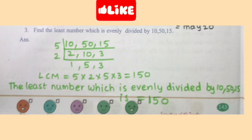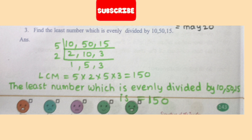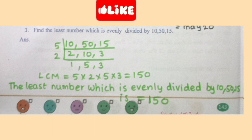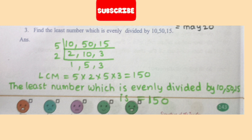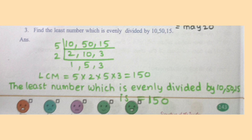Find the least number which is evenly divided by 10, 50 and 15. The LCM of 10, 50 and 15 is 5×2×5×3 = 150. So the least number which is evenly divided by 10, 50 and 15 is 150.